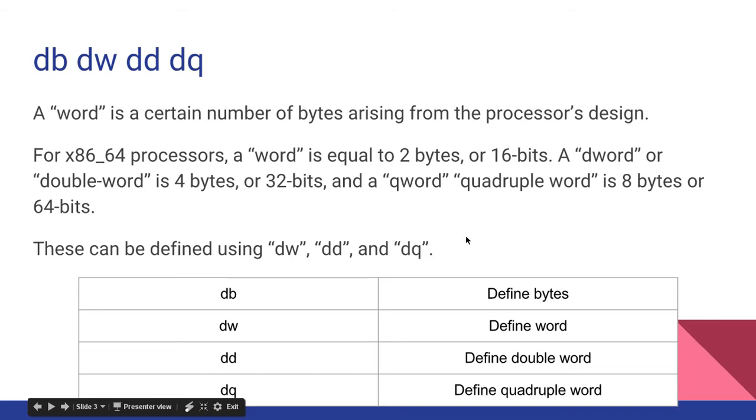So it's kind of easy to remember because a word is 2 bytes, so DWORD DOUBLE, that's just DOUBLE is 2. So just 2 words, that's 4 bytes, then QUADRUPLE, which is 4, that's just 4 times 2, which is 8 bytes or 64 bits. So these can be defined using DW, DD, and DQ.